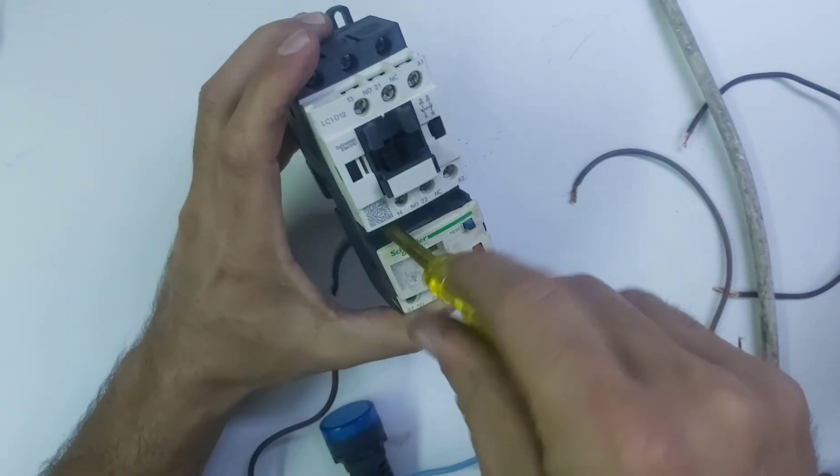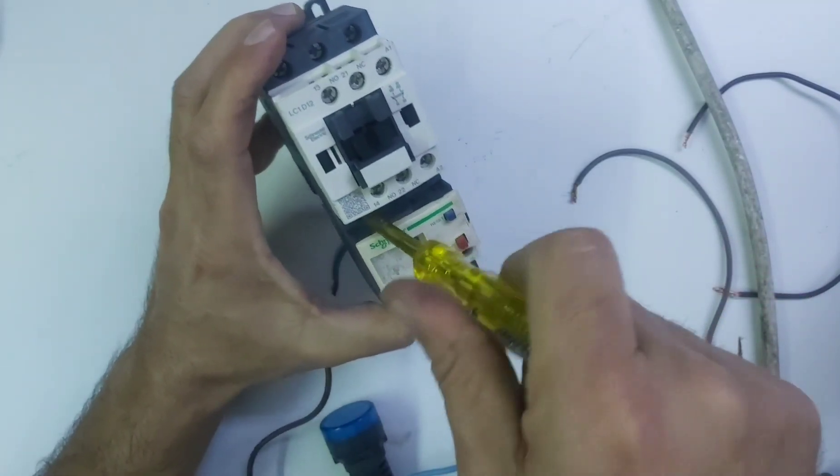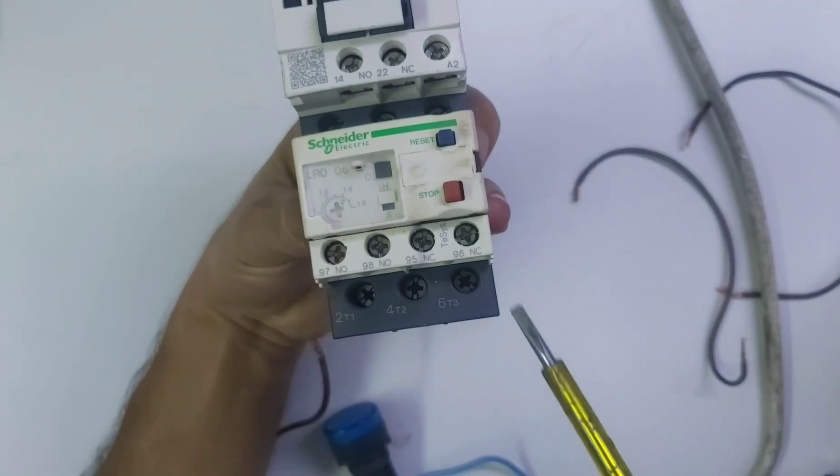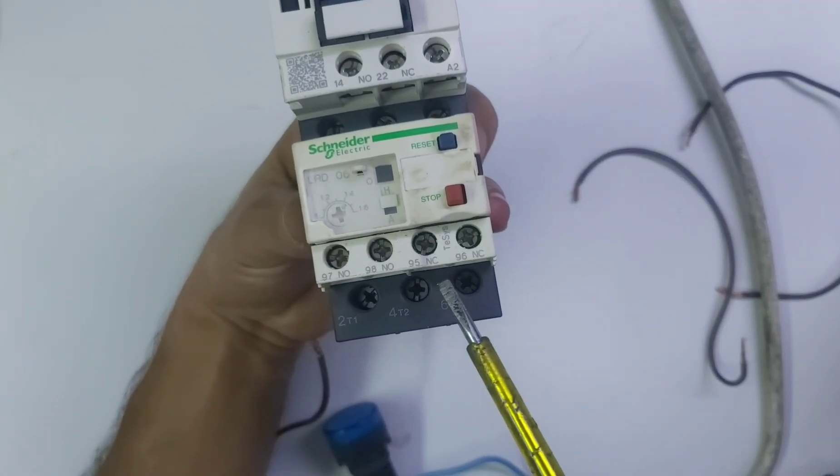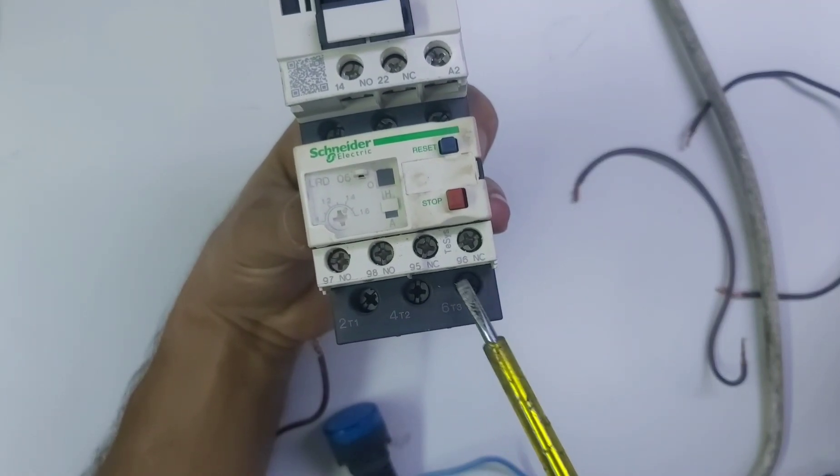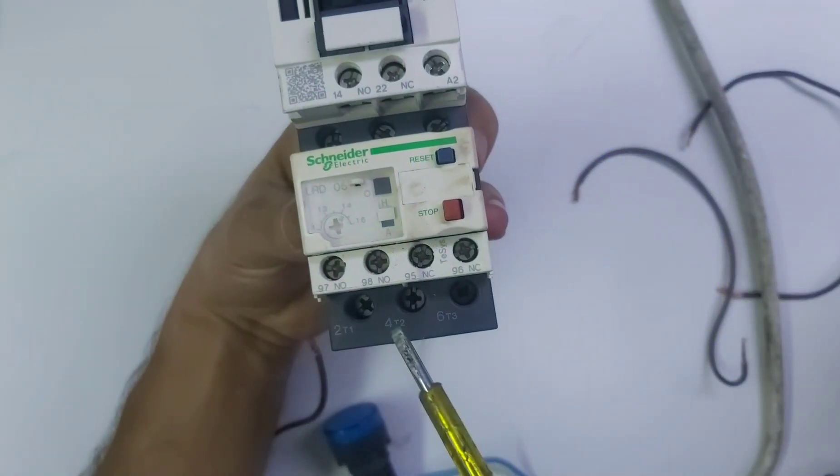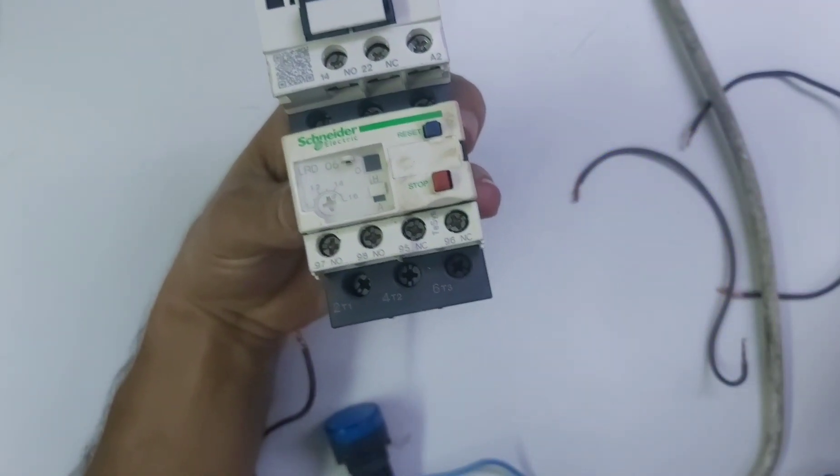After that, we need to do the connection. See, this is the point we have to use for control. We need to give power to 95, from 96 out to A1, okay? And here we will do one loop. Let's start the connection.